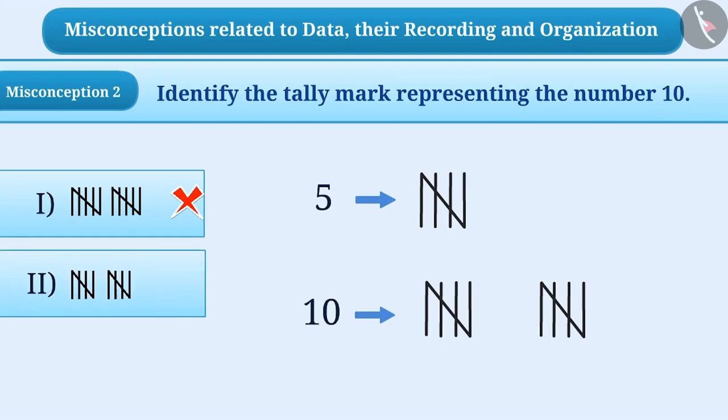Here, in option 2, you can see this type of representation. From this representation, we get to know that this is 5 plus 5, which equals 10. That means option 2 is the correct answer.